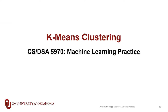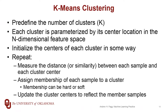With k-means clustering, we imagine partitioning our n-dimensional feature space into k different regions. The number of regions, or number of clusters, is predefined — a hyperparameter that we get to choose coming into the learning process.